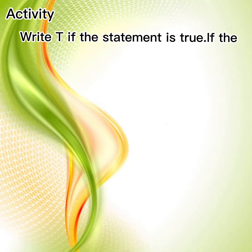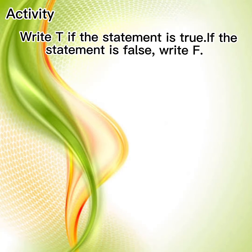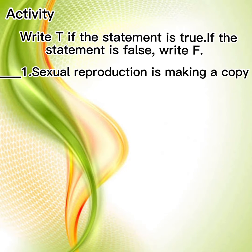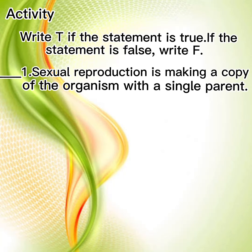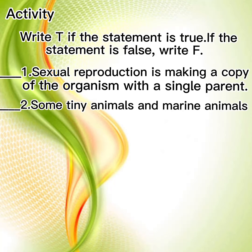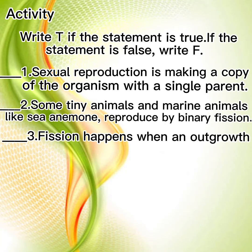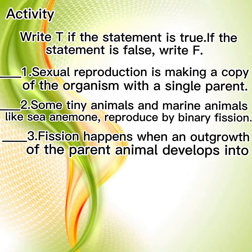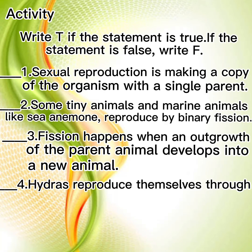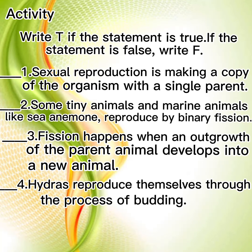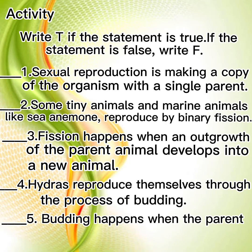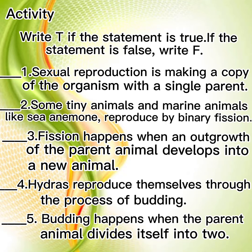Write T if the statement is true, write F if the statement is false. 1. Sexual reproduction is making a copy of the organism with a single parent. 2. Some tiny animals and marine animals like sea anemone reproduce by binary fission. 3. Fission happens when an outgrowth of the parent animal develops into a new animal. 4. Hydras reproduce themselves through the process of budding. 5. Budding happens when the parent animal divides itself into two.